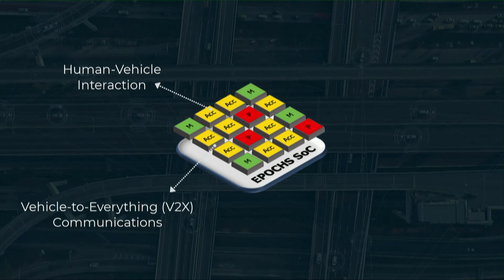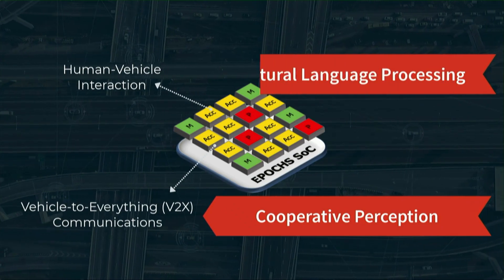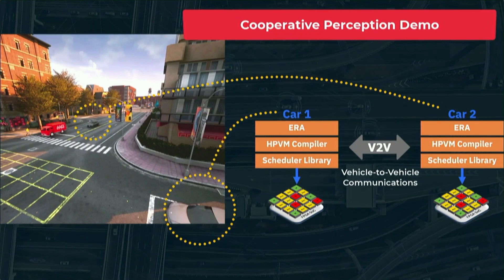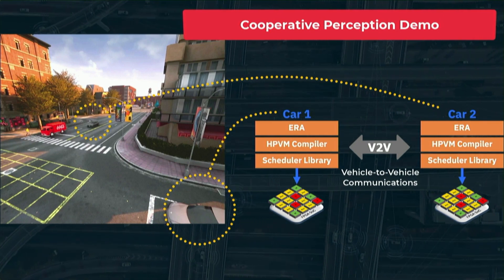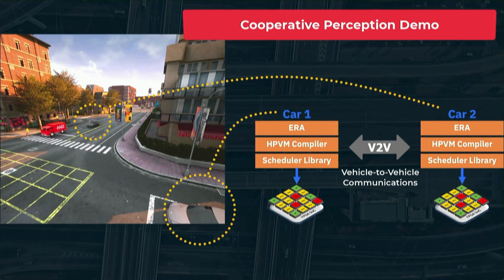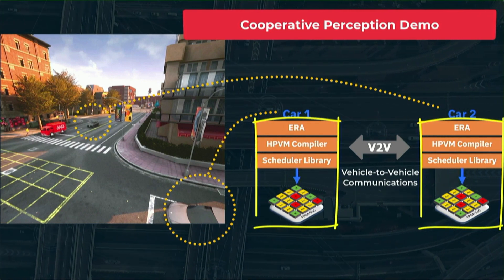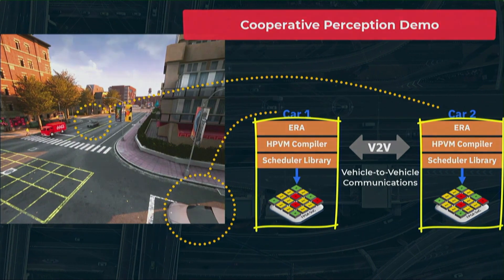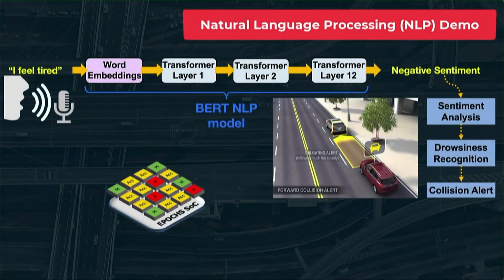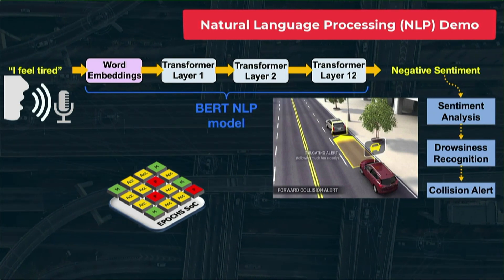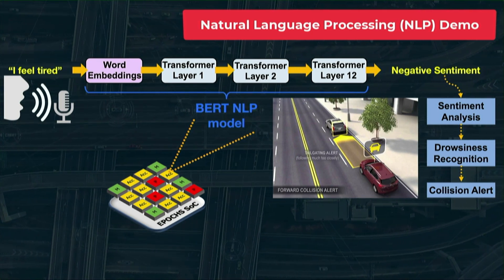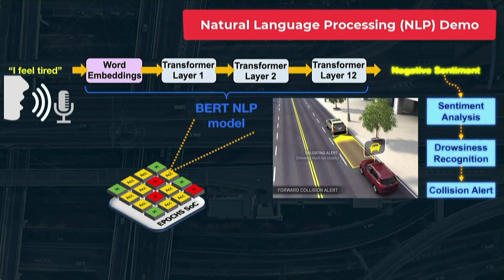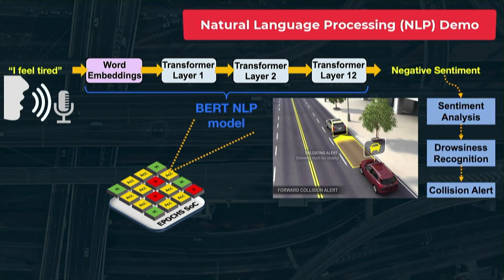Specifically, we focus on two use cases: cooperative perception and natural language processing in future cars. The cooperative perception demo shows our ERA application running on multiple cars, interacting on the road via vehicle-to-vehicle communications. We demonstrate the benefits of real-time constraint cooperative perception and decision making using our EPOC's SOC and software stack. The natural language processing demo shows the use of our EPOC's SOC with specific NLP acceleration support to conduct real-time sentiment analysis of the vehicle occupants, which can engage proactive safety mechanisms when specific behavioral patterns are detected in car drivers.